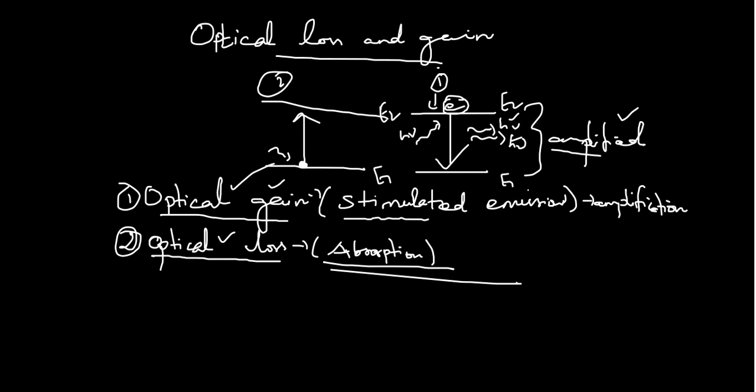In the case of absorption, that is not the case as with stimulated emission. Here the electron absorbs the energy and moves towards the higher energy level, and the photon loses its energy — there is no emission. This is just absorption: the photon loses its energy to the electron, and that is called optical loss. So optical gain is related to stimulated emission, and optical loss is related to the absorption process.